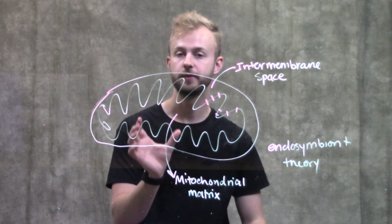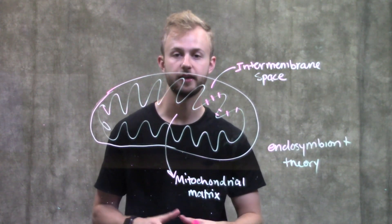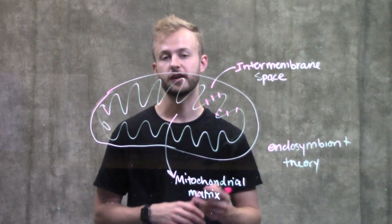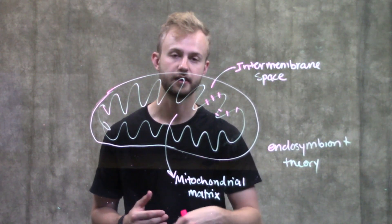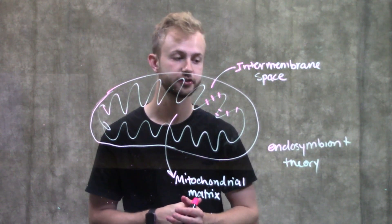Inside the mitochondrial matrix, they have their own DNA and their own ribosomes, so they're capable of making their own proteins, as well as a lot of enzymes that are needed for cellular respiration.